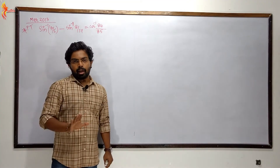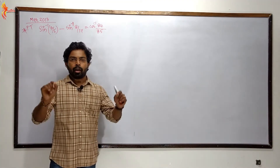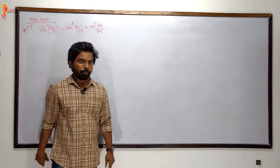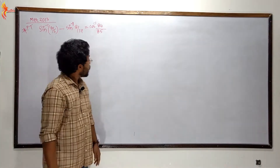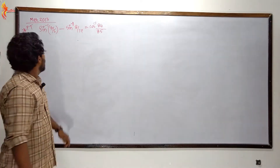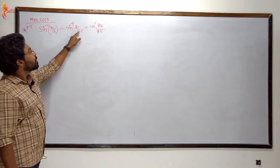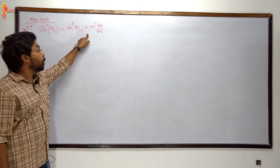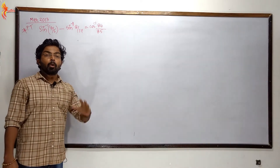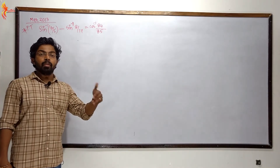What do we do? We have to prove that sin inverse of 3 by 5 minus sin inverse of 8 by 17 is equal to cos inverse of 84 by 85. We have to prove that using sin inverse and cos inverse.